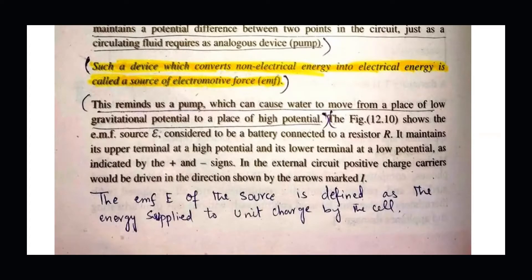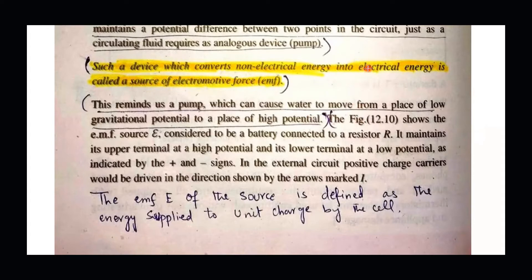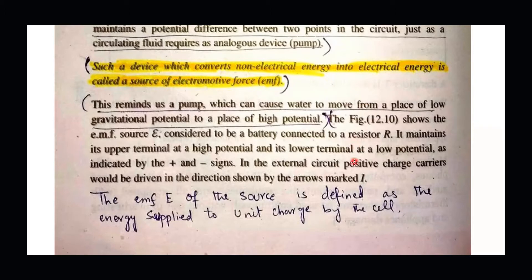For example, consider a water tank and a water pump. The water tank at a higher level automatically flows into taps because it is at a higher potential — just like our positive terminal. But for underground water reservoirs, you need to use a source — a water pump — to pump the water up to the tank. So the water pump is basically our electromotive force. It is the source that moves water upward, just as EMF moves charges in a circuit.